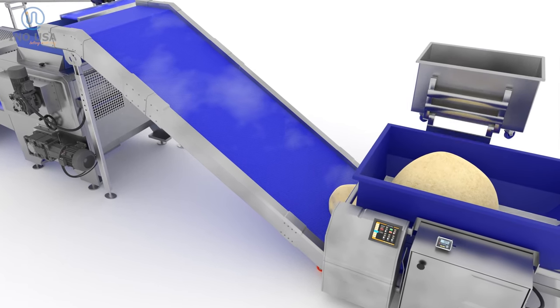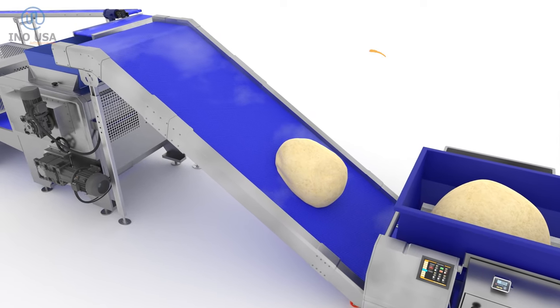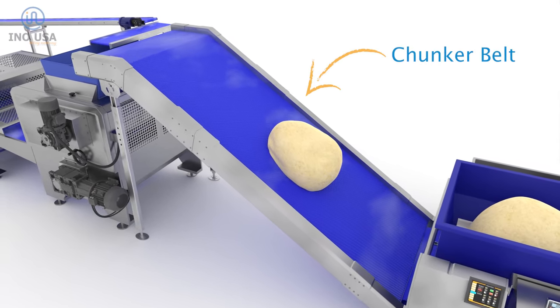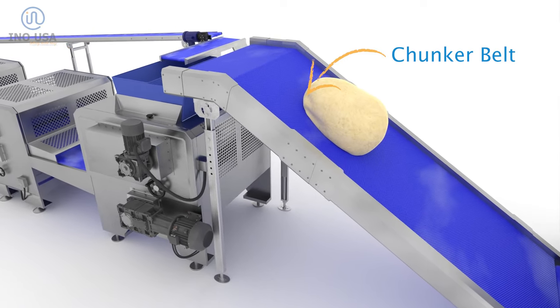Once in the bin, a guillotine cuts a log or chunk of dough and a conveyor belt on the base of the bin moves it to an incline belt called the feed conveyor, or the chunker belt, that will move the dough to the sheeter.